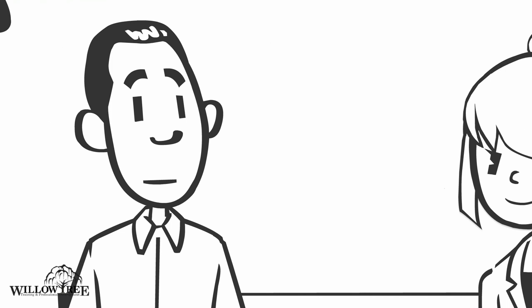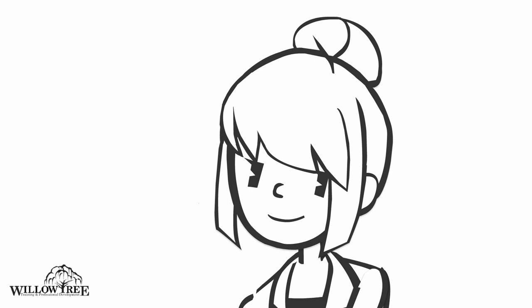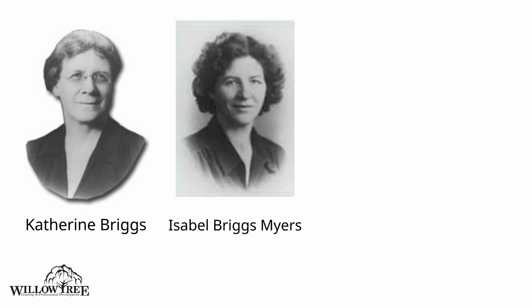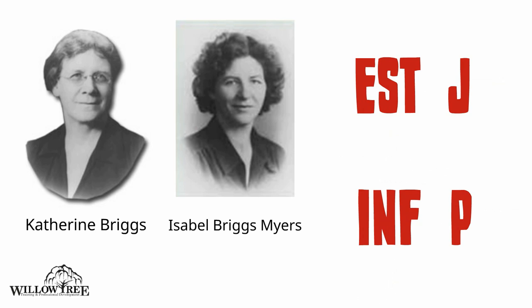Some of us use our judging function — our thinking or feeling — in our daily lives, and some of us use our perceiving function — our sensing or intuition — in our daily lives. The mother-daughter team of Katherine Briggs and Isabel Briggs Myers, who created the four-letter code of the Myers-Briggs Type Indicator, added this last letter as a pointer to indicate which of your mental functions is used in your daily life.